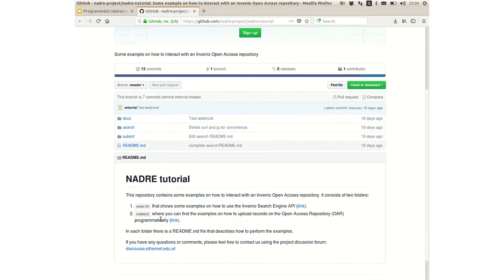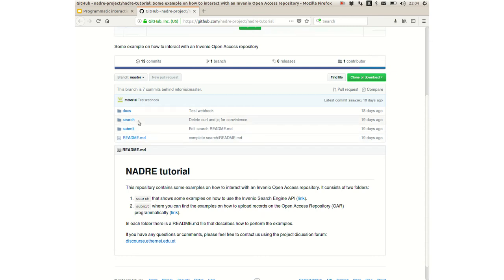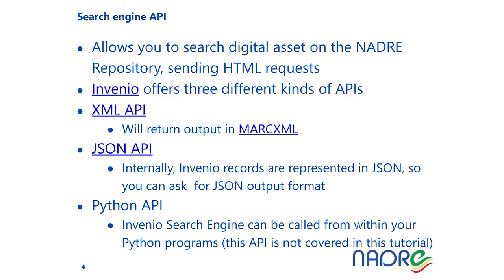This repository is organized in subfolders. You can refer to the search folder for the Search Engine API examples and the submit folder for the hands-on on how to submit files to the repository. The Search Engine API allows you to search digital assets stored in the repository. This can be done simply by running HTML requests, and you can use the Search Engine API to develop your own application that interacts with the repository.